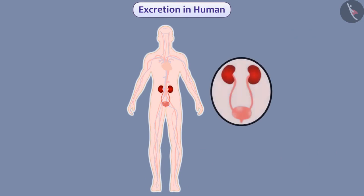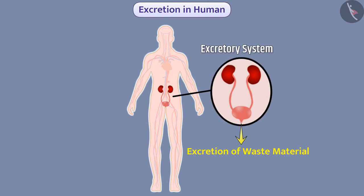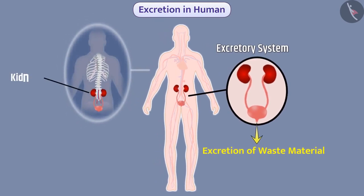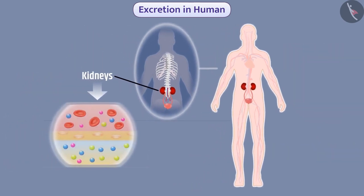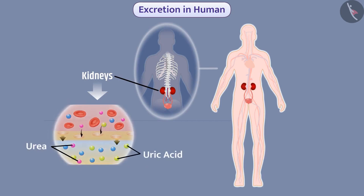In humans, excretion of waste material is done with the help of the excretory system. A pair of kidneys are located on the back side of the abdomen on both sides of the spinal cord, with the help of which the nitrogenous waste — urea and uric acid — present in the human blood are separated by the process of filtration.